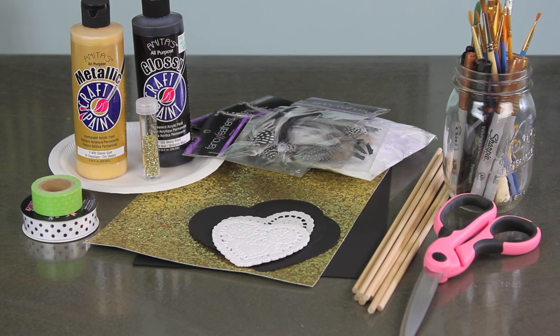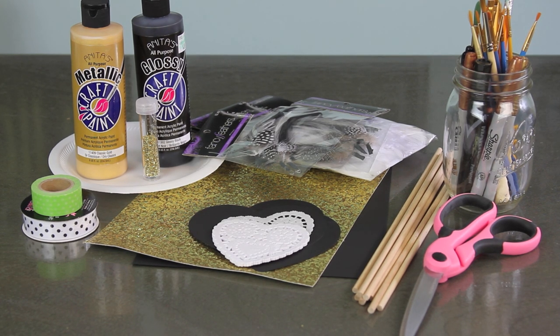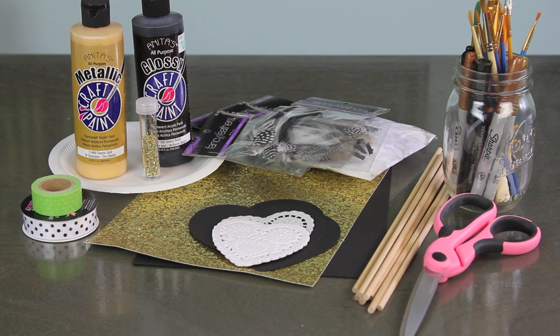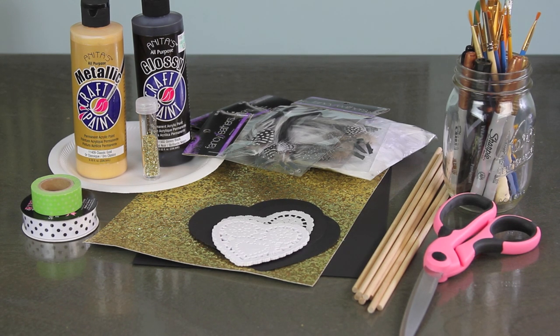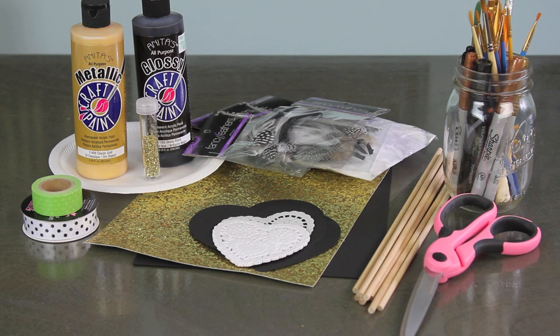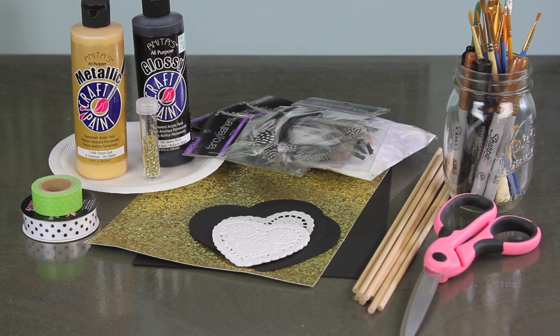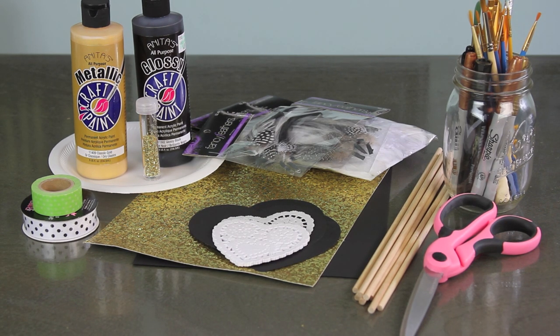Okay, to get started on this first project you need some craft paint in black and gold as well as some gold glitter, black scrapbook paper, heart doilies, feathers in black and white or multicolor if you like those. You need some tape, some ribbon and glitter felt, some dowel sticks, some scissors, a paintbrush, and the only thing I didn't get in this picture was a hot glue gun.